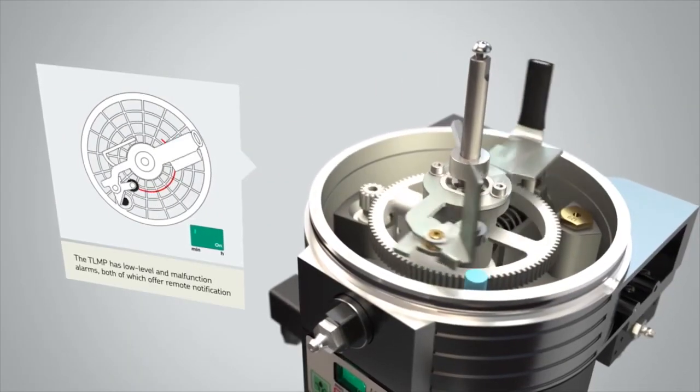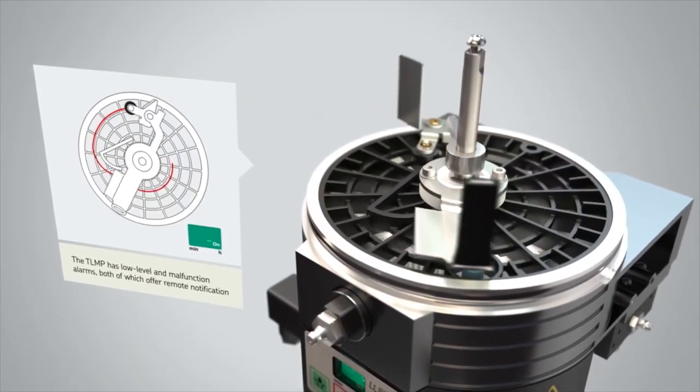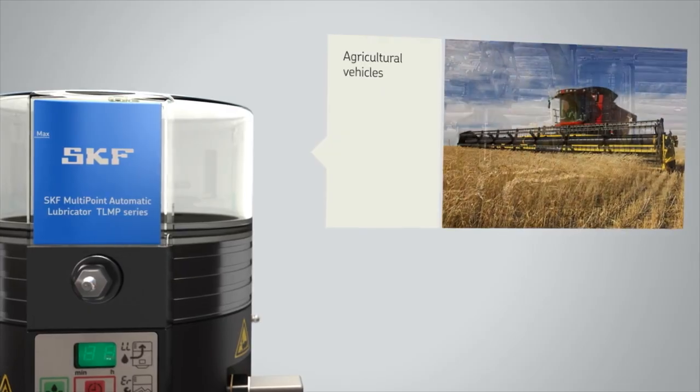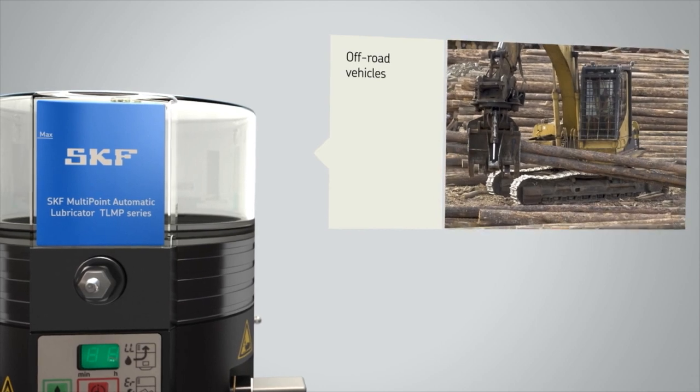The TLMP series has a 1 litre reservoir and a stirring paddle, making it suitable for a range of lubricants and ideal for various agricultural applications, off-road vehicles and industrial applications.